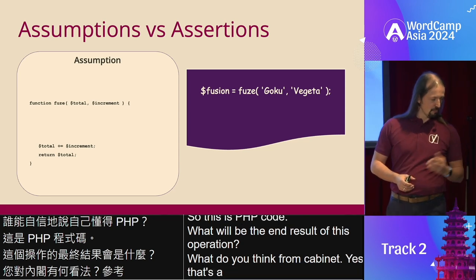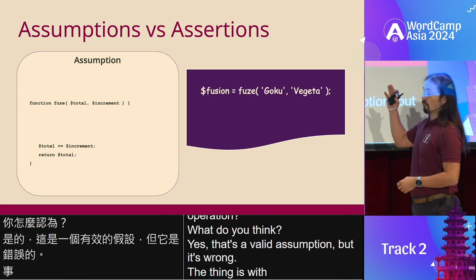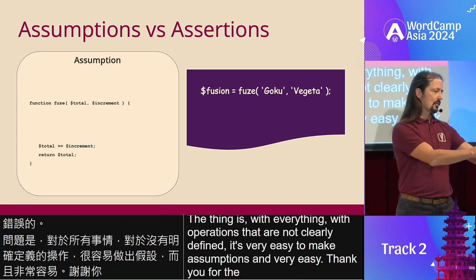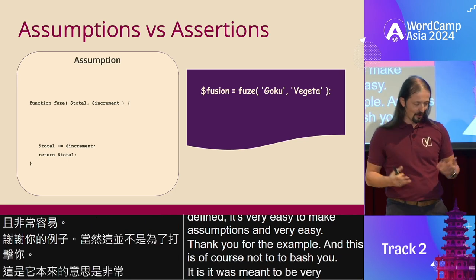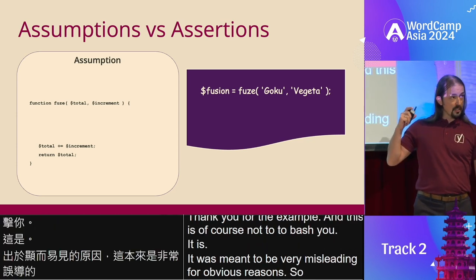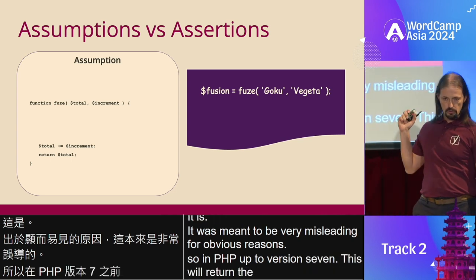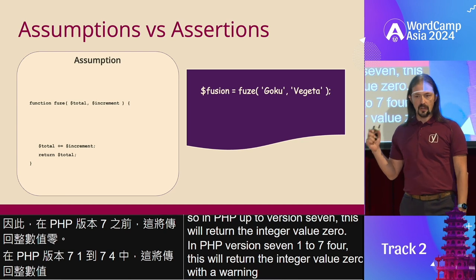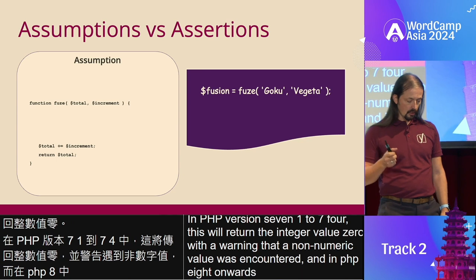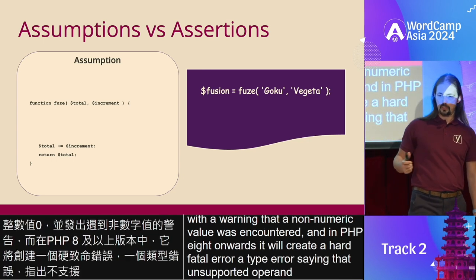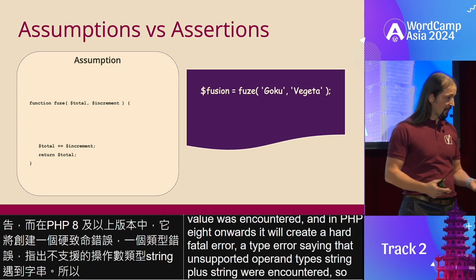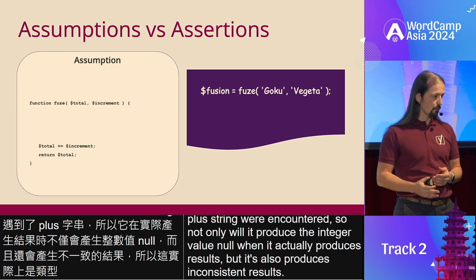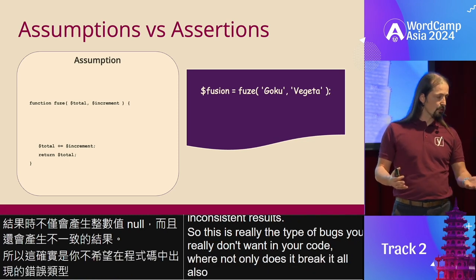That's a valid assumption, but it's wrong. With operations that are not clearly defined, it's very easy to make assumptions. In PHP up to version 7, this will return the integer value 0. In PHP version 7.1 to 7.4, this will return the integer value 0, with a warning that a non-numeric value was encountered. And in PHP 8 onwards, it will create a hard fatal error — a type error — saying that unsupported operand types, string plus string, were encountered. So not only will it produce the integer value 0 when it produces results, but it also produces inconsistent results depending on where you run it.